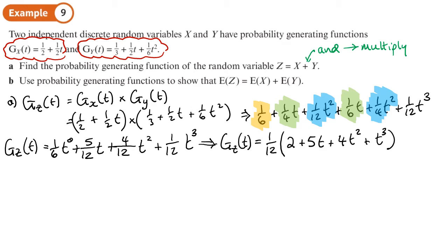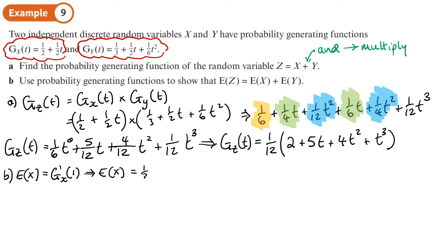Part B says: use the probability generating functions to show that the mean of Z equals the mean of X plus the mean of Y. The mean of X is found by differentiating the PGF for X and substituting in t = 1. Differentiating the PGF for X just gives ½, so E(X) = ½.